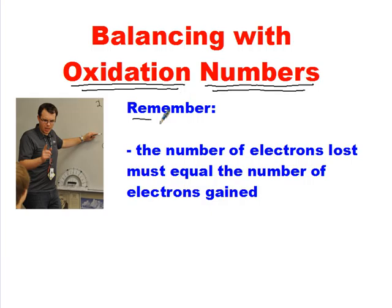Here's the big thing to keep in mind: it's the conservation of matter. The number of electrons that are lost in any sort of chemical reaction has to equal the number of electrons that are gained in that same reaction. And that's the big idea we're going to exploit here in order to balance this equation.